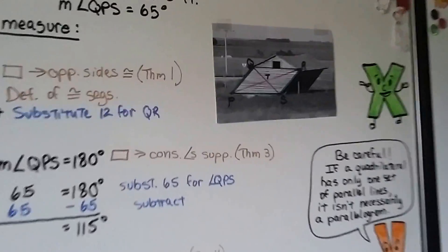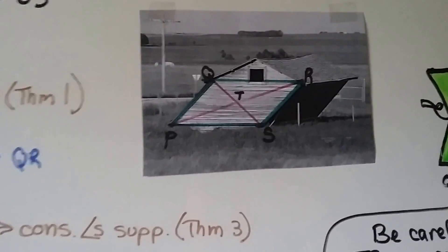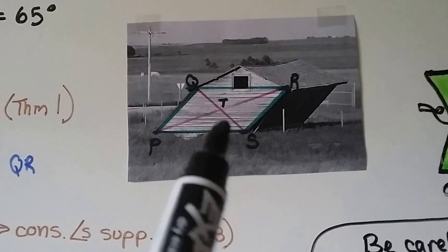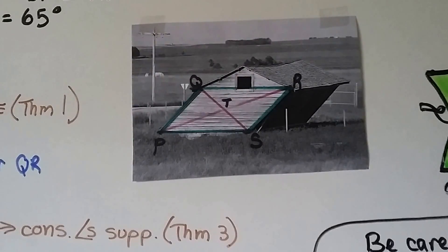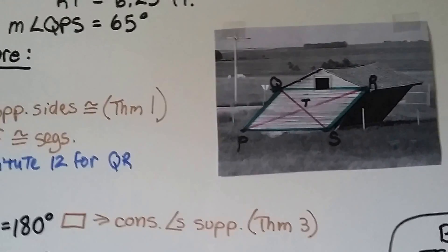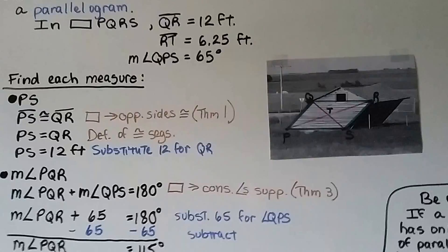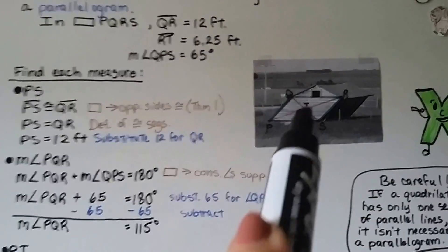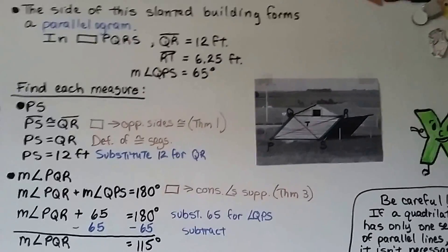Now let's get a little silly. Look what I found on the internet. I was looking for pictures of parallelograms, and I found this. So someone's barn or garage or shed is just really leaning. So the side of this slanted building forms a parallelogram. And we have PQRS, and they bisect the diagonals at T in the center there.